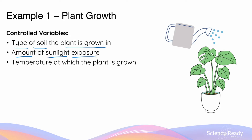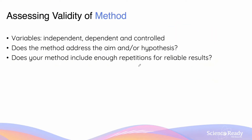Another potential control variable is the temperature at which the plant is growing, as very hot or very cold temperatures can contribute to growth rate. For such a simple experiment, I've already identified three control variables, and there are more. Spending time to identify these before conducting the experiment is very important, as they affect whether the method will address the aim and test the hypothesis — ultimately affecting the validity of your experiment.